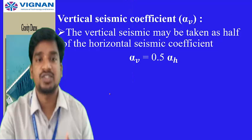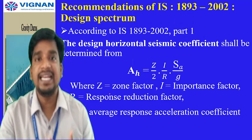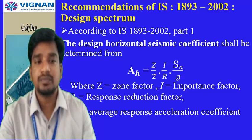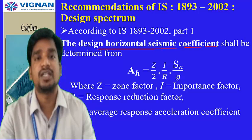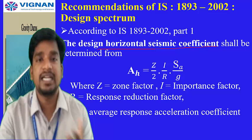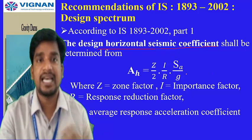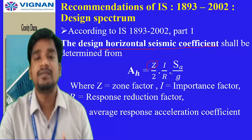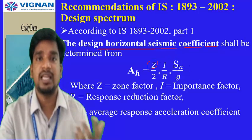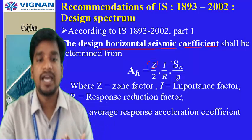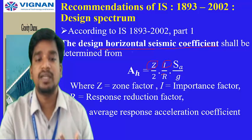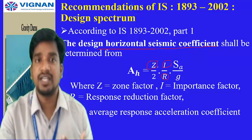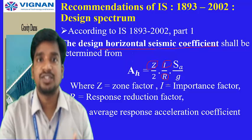According to the latest edition IS 1893:2002, the formula for the design horizontal seismic coefficient is: alpha_h = (Z/2) × (I/R) × (Sa/g), where Z is the zone factor (newly added in the revised edition), I is the importance factor (also present), and R is the response reduction factor (newly added in the revised edition). Sa/g remains as in the previous formula. Two important changes in the revised code are the inclusion of Z (zone factor) and R (response reduction factor).